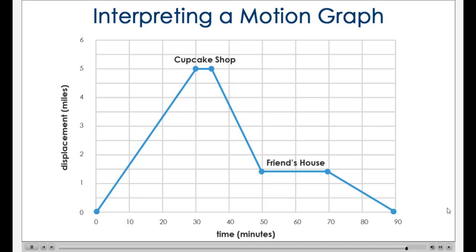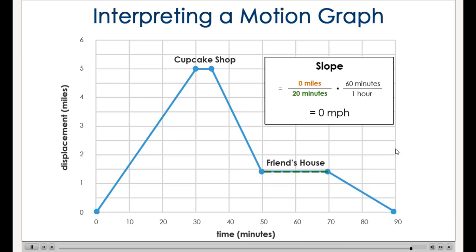Look at the motion graph for the segment of the trip during which you were visiting your friend. What is the slope here? The slope is zero here. The rise is zero. Therefore, the slope is zero. So your speed is zero. No big surprise.